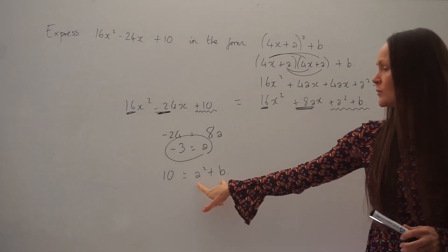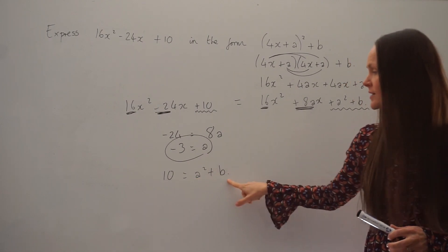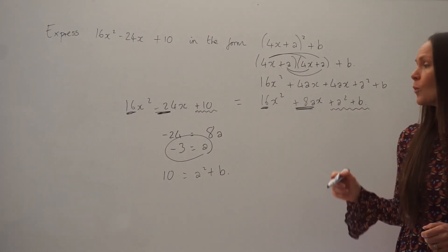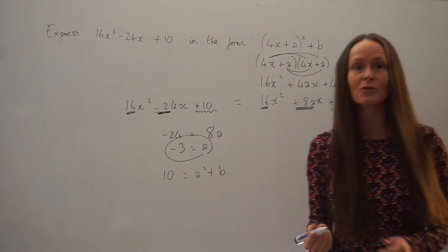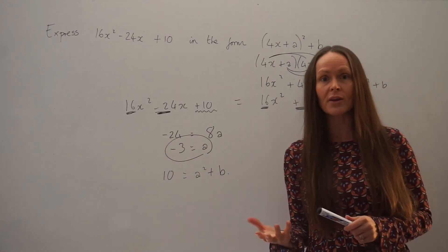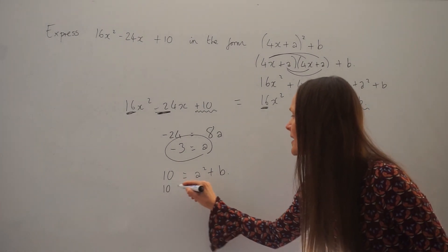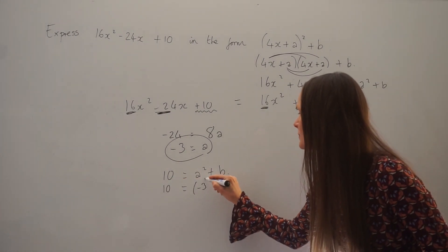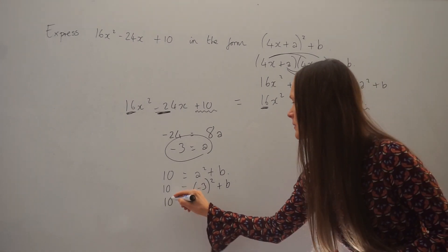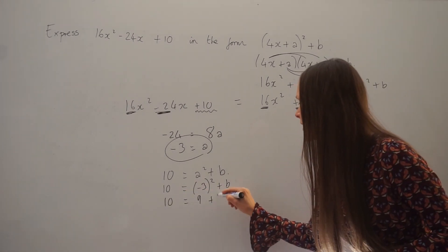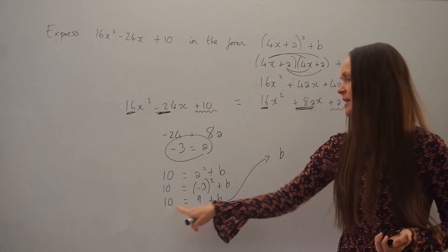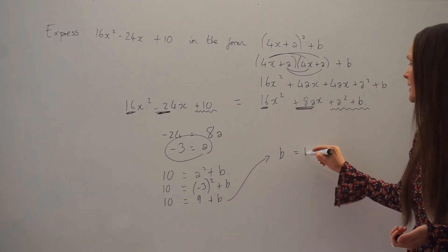We've got two unknowns here, so it's difficult to solve this equation. But we just worked out the value of a above, so what you can do next is substitute that value of a, negative 3, into this equation and then solve to find b. I'm going to replace a with negative 3. If I square negative 3, I get positive 9. And then if I subtract 9 on both sides, I get 1 — because 10 minus 9 is 1. So b is equal to 1.